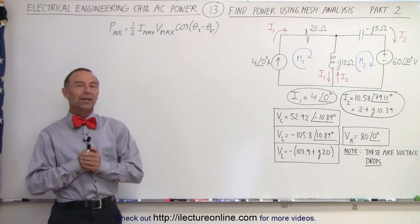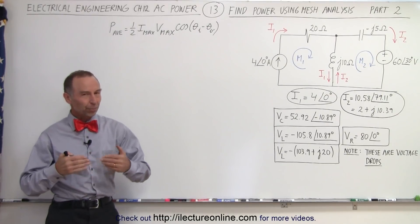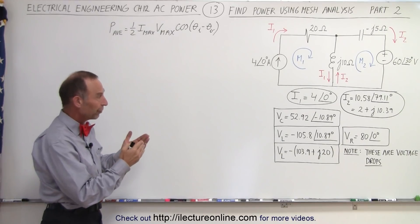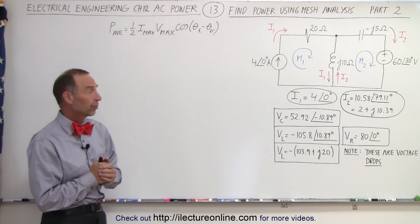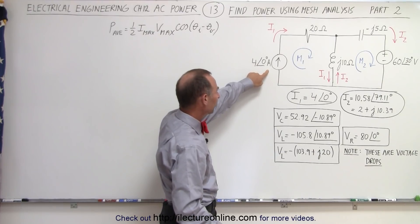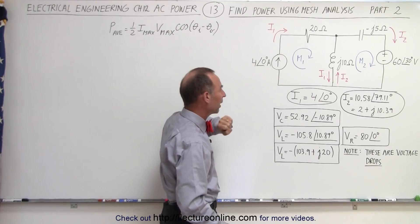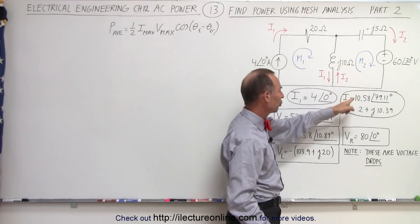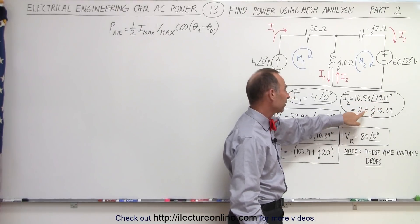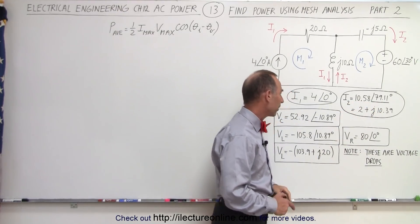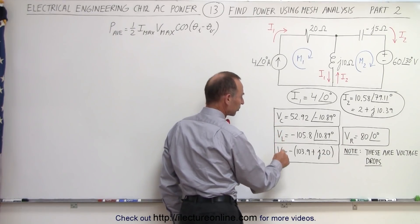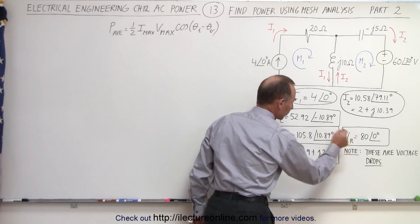Welcome to ElectronLine. Here's part two of our problem we started in the previous video. So far, these were the results: we found current I1, which was basically the current of our current supply. We found the current in mesh two, expressed in both magnitude and phase angle and real and imaginary parts. Then we had the voltage across the capacitor, across the inductor, and across the resistor.